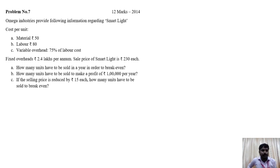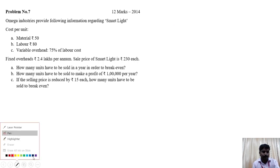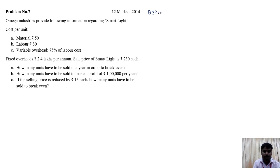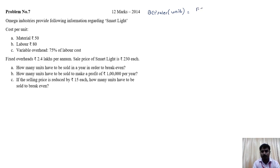Starting with the solution. First question is with regard to the break-even point. The formula for BEP sales units equals total fixed cost divided by contribution per unit. We need to apply the available information to this formula.